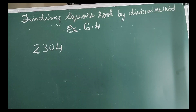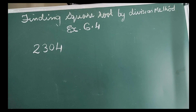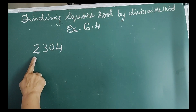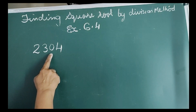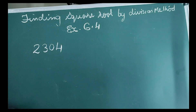Exercise 6.4, Question number 1. Find the square root of each of the following numbers. First number is 2304.